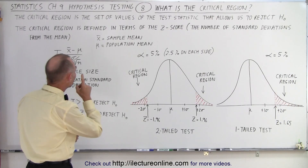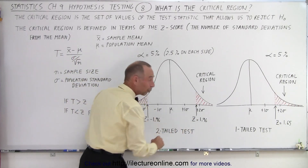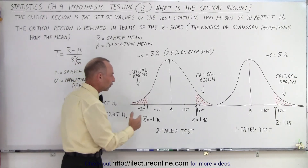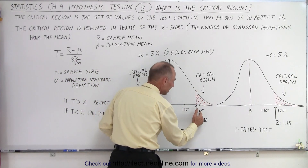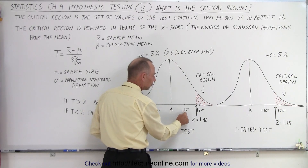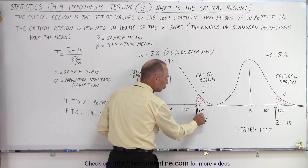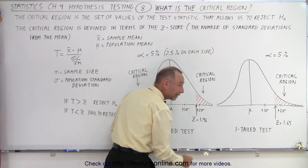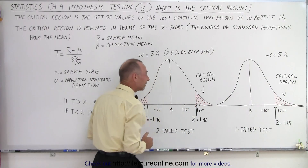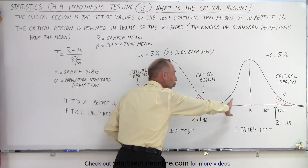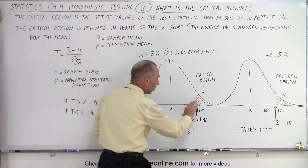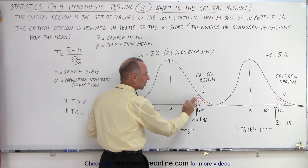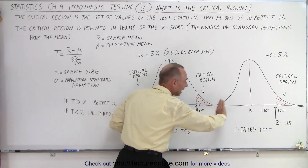The critical region is defined in terms of the Z-score. The Z-score gives you the quantity of standard deviations. Here we have one and two standard deviations to the right of the population mean, so Z equals 1 and Z equals 2. The boundary of the critical region is just to the left of two sigmas — at 1.96 sigmas — giving us a Z-score of 1.96, and any Z-score greater than that falls in the critical region.